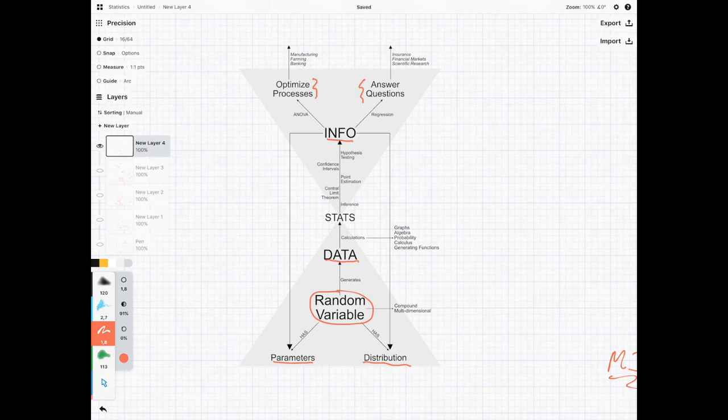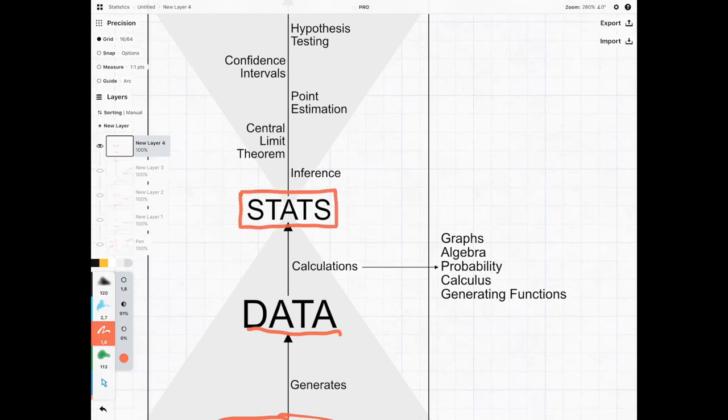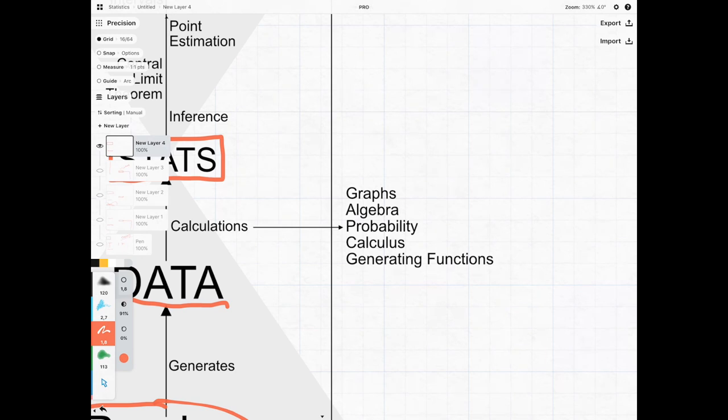In order to get from data to information we have to do a little bit of stats, and that's where the mathematics comes in. One of the most interesting forms of mathematics is this thing called generating functions.